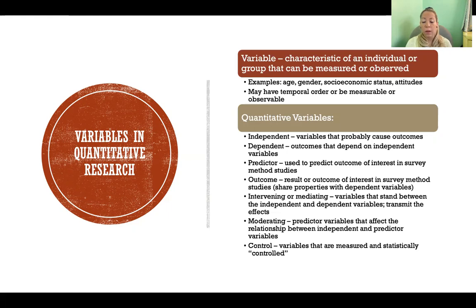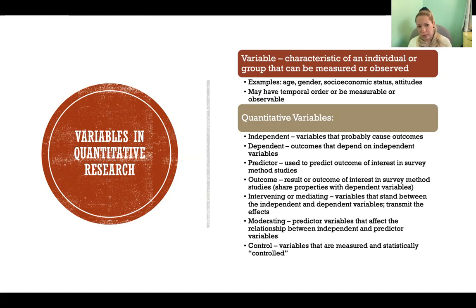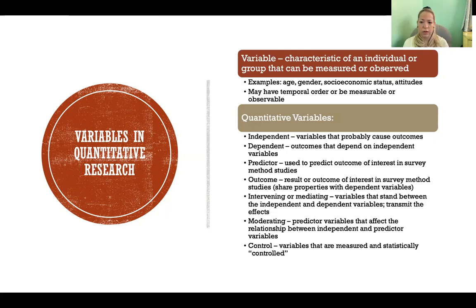Dependent variables are the outcomes that are caused or changed by the independent variables. An outcome is a result or outcome of interest in survey method studies, similar to dependent variables.